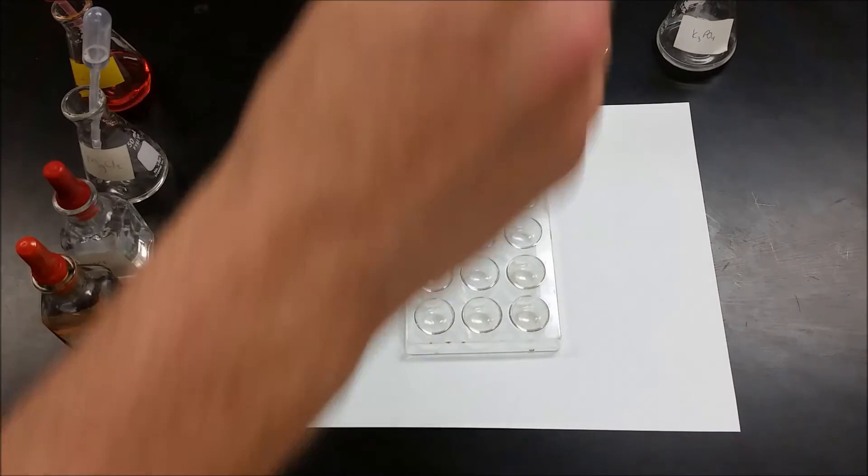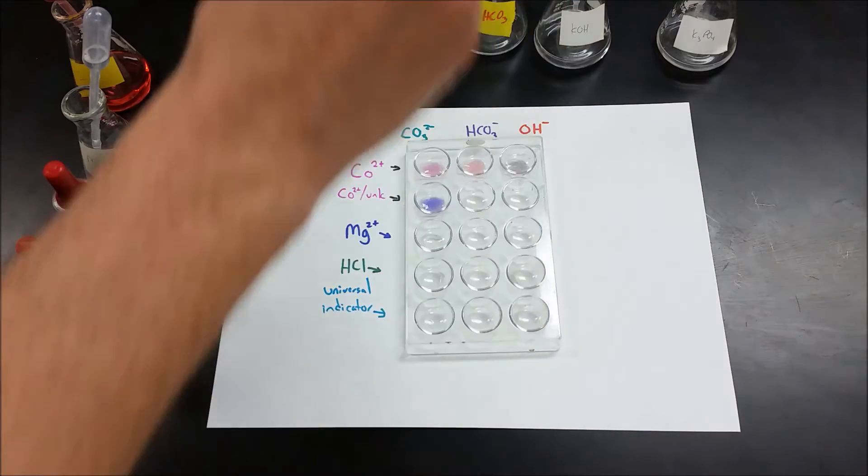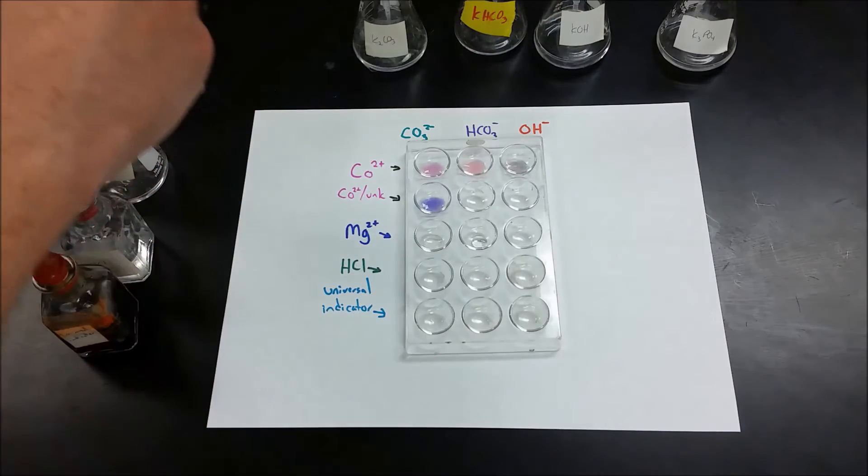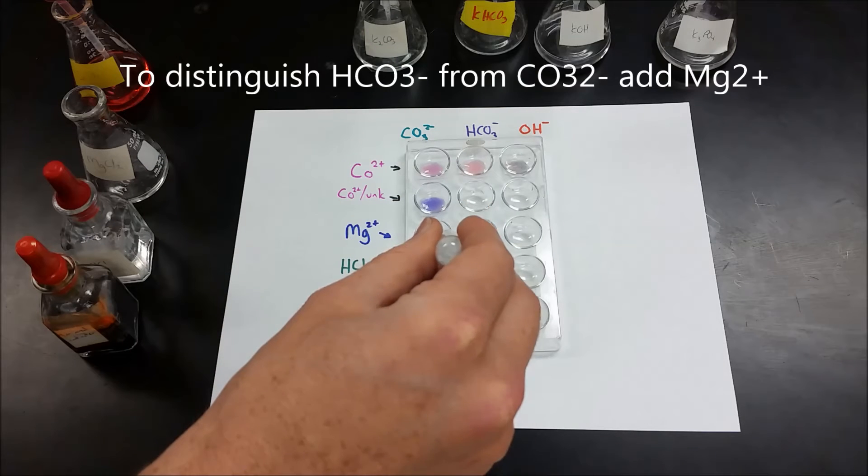So the next test we're going to do is we're going to put some carbonate down here, bicarbonate next to it. Then we're going to add to that any magnesium compound. I have magnesium chloride here.